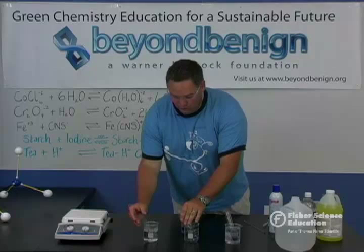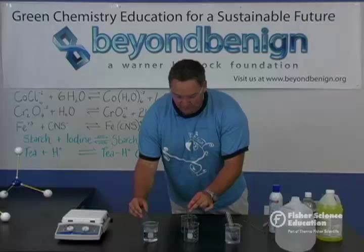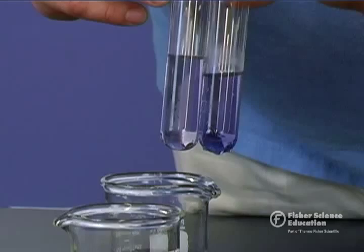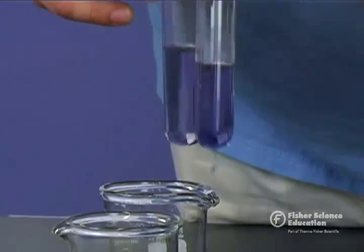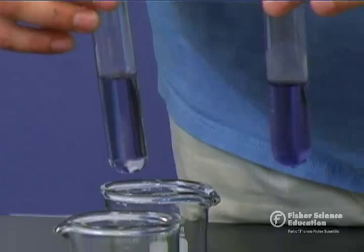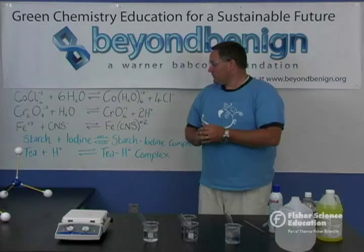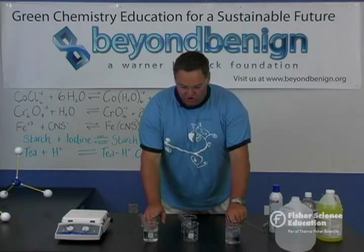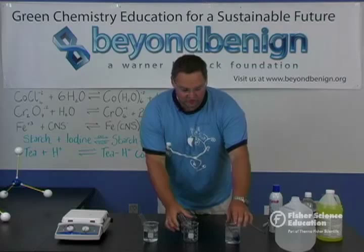Examining our warm water solution, we see that the colored starch-iodine complex has almost completely shifted away when compared to our control. When we compare our chilled sample to our control, we see that the equilibrium has shifted to produce more of the starch-iodine complex. This equilibrium can be shifted back and forth multiple times — we could shift our chilled sample back to the warm and return to the clear solution if desired.